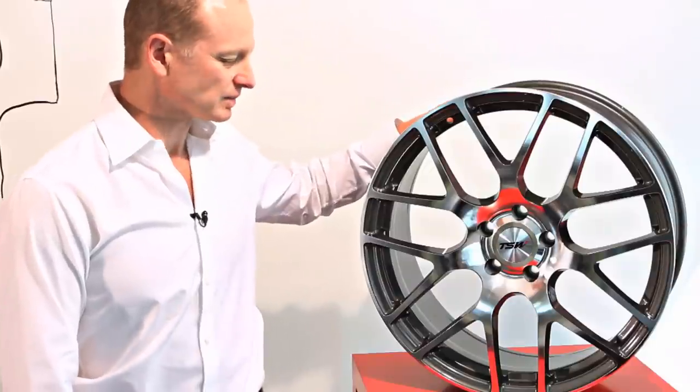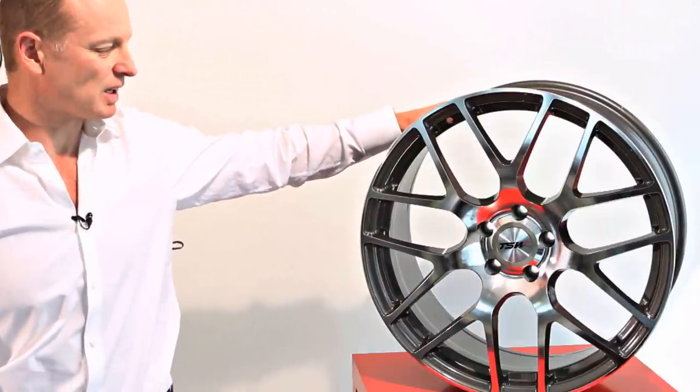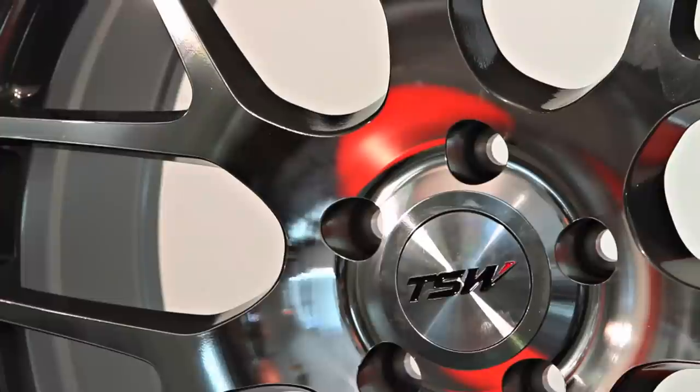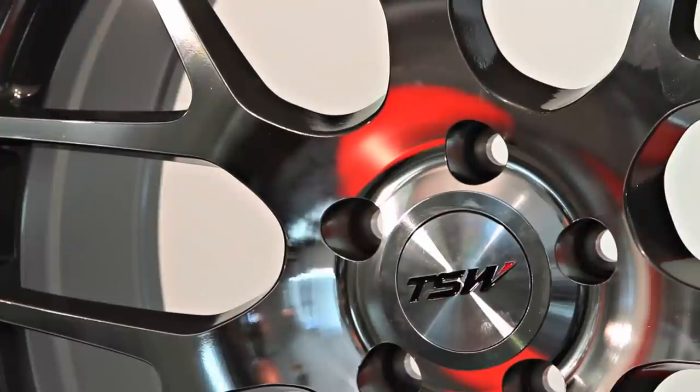The wheel comes with hub centric ring system and is available again in 17 to 22 inch sizes. We also make the Interlagos in the rotary forge technology and we'll be releasing a new wheel at the end of 2012 under the TSW brand.